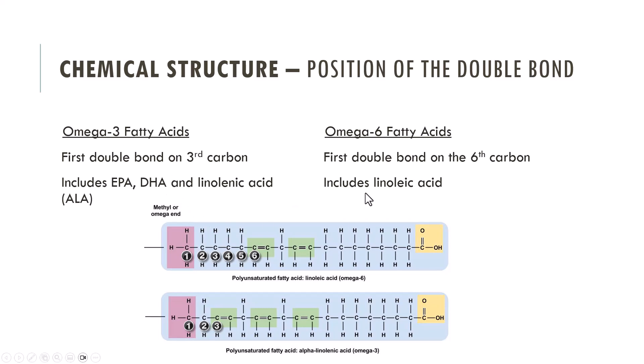The omega-3 fatty acids we focus heavily on because of their health properties, and they include EPA, DHA, and linoleic acid. You may recognize the names of EPA and DHA, which are critical to brain development and some other important functions in the body. They are typically found only in fish and breast milk.